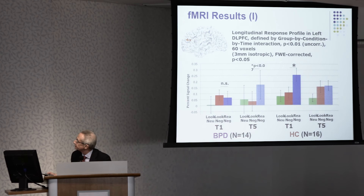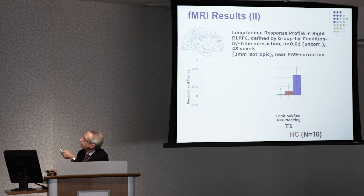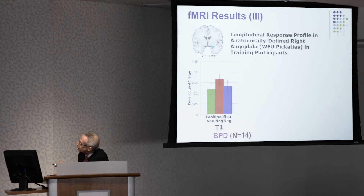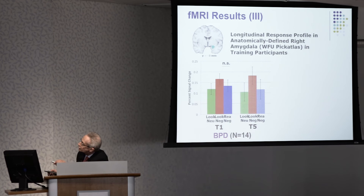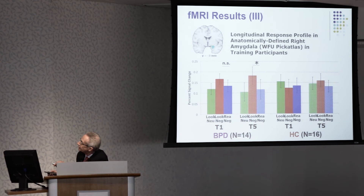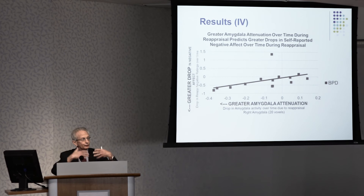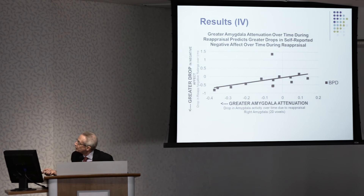In the amygdala, borderline patients on day one don't show a significant drop in amygdala activity when reappraising. But after training, there is a significant drop in amygdala activity when reappraising. We also looked at the association between changes in amygdala activity from day one to day five in borderline patients and the drop in their negative picture ratings — and we found that the more amygdala attenuation with distancing training, the greater the drop in their negative affect reports.